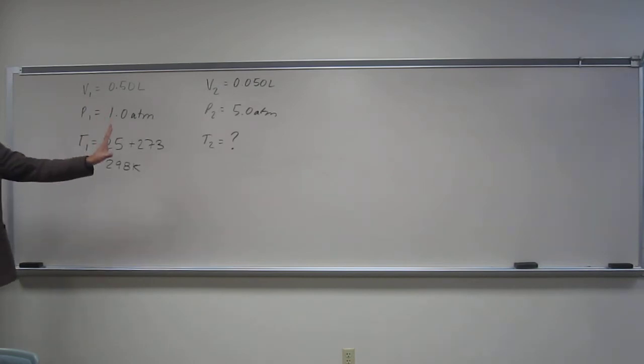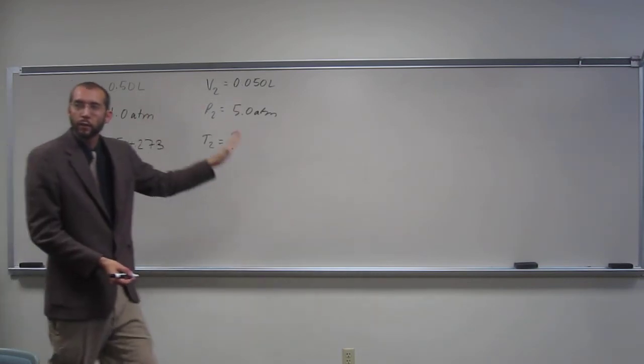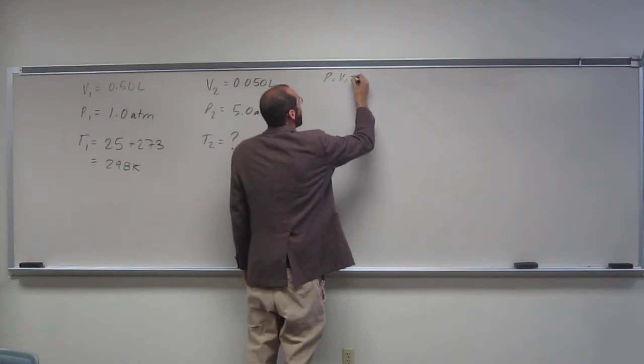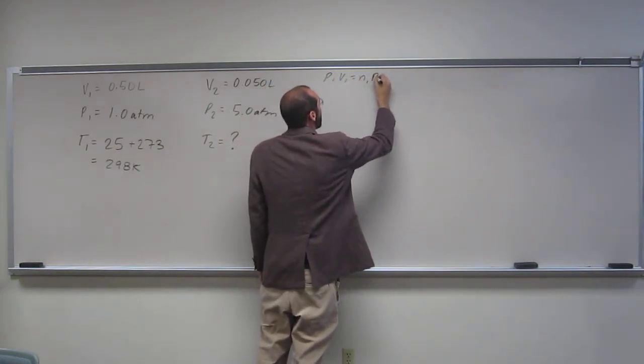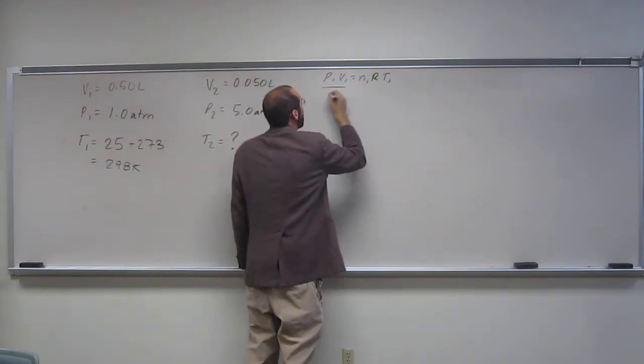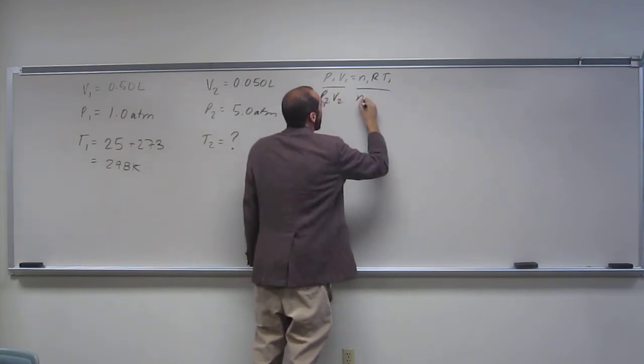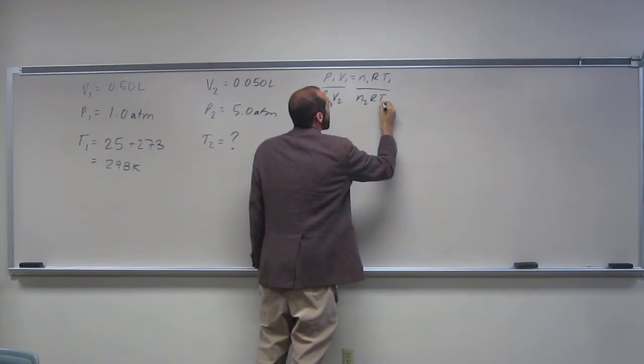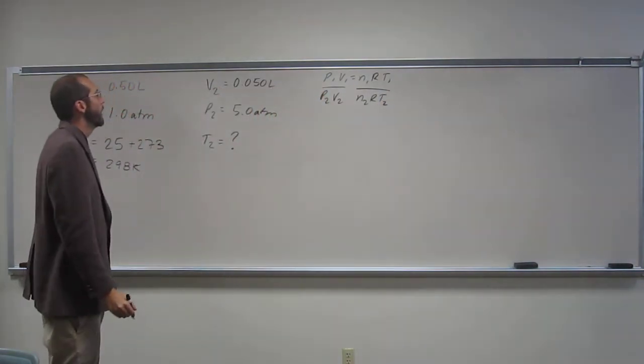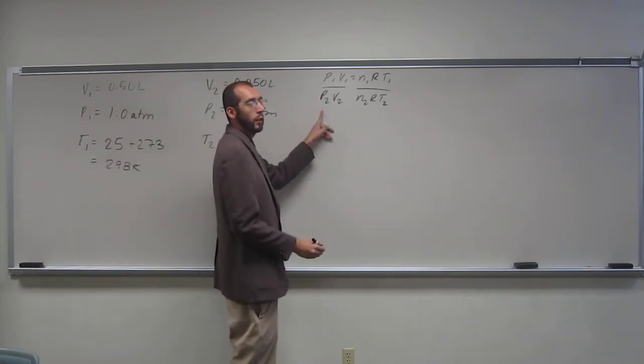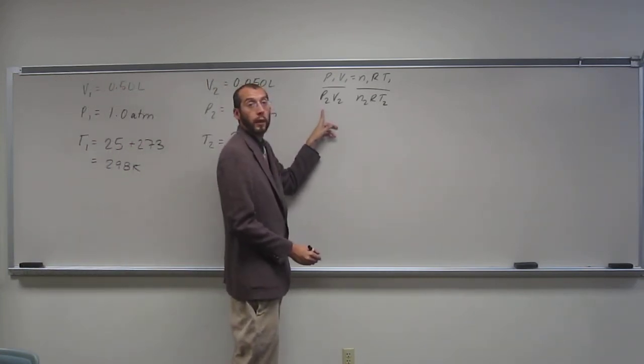So is this a changing problem or staying the same problem? It's changing. So we're going to have to cancel stuff out, right? So we're going to use P1V1 equals N1RT1 over P2V2 equals N2RT2. Okay, so what things are changing? Is P changing? Yeah, so we keep it in there, right?